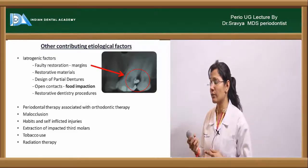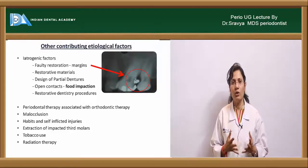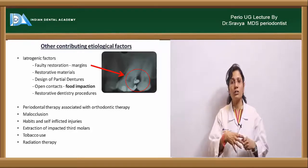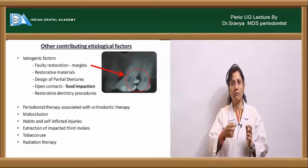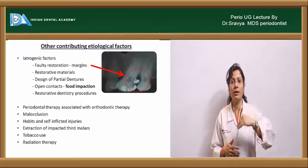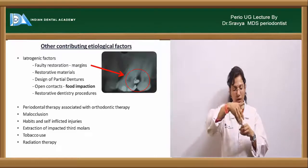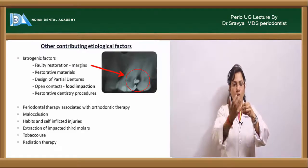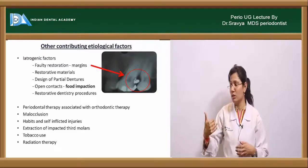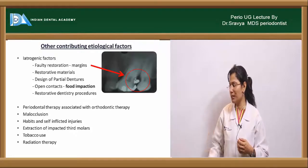Extraction of impacted third molars requires proper flap approximation at the distal aspect of the second molar. Failure to do so leads to development of a distal pocket with severe bone loss, which acts as a source for further plaque and deposit accumulation.